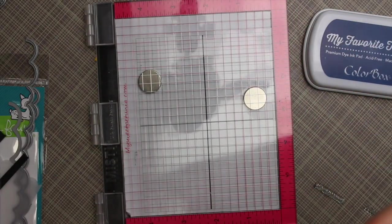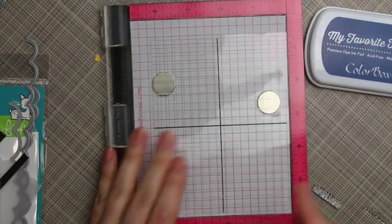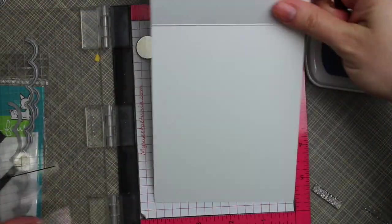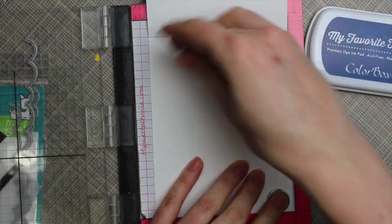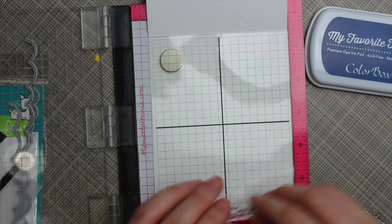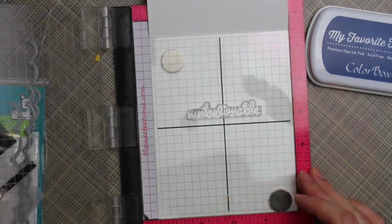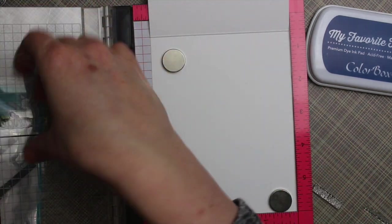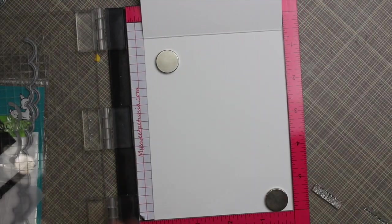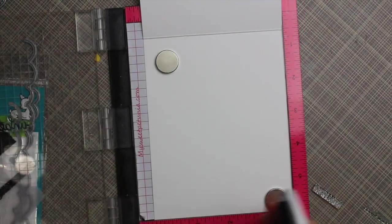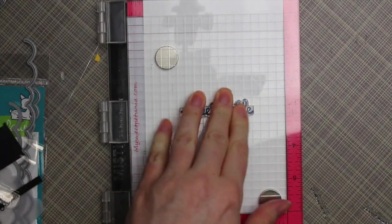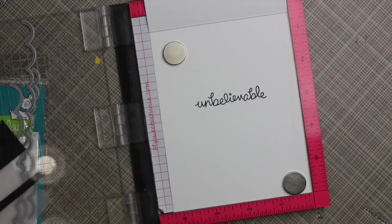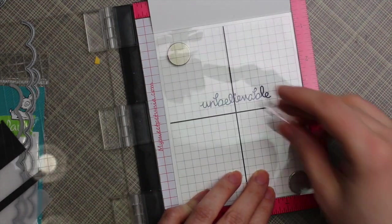And then went on to finish the card base, which is standard A2 size card four and a quarter by scored at five and a half. It's 11 inches tall. And I used my mini MISTI because I wanted to make sure I got the sentiment lined up perfectly on the inside as because it comes in different pieces in the stamp set so that you can customize it to whatever you want. So I lined up the unbelievable first and stamped that with that same blueberry ink.